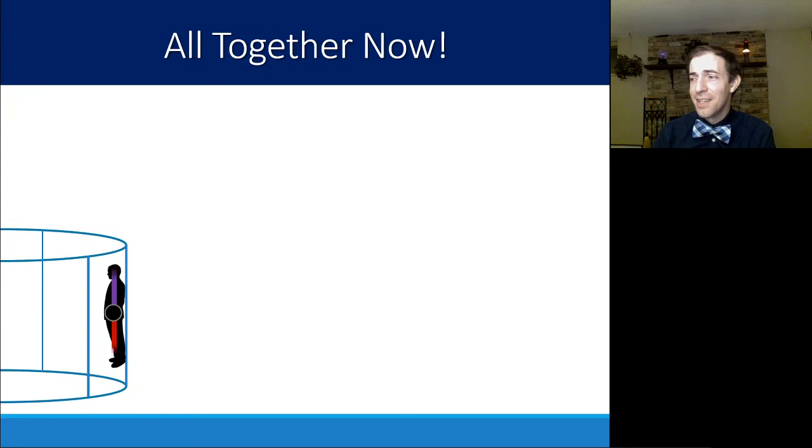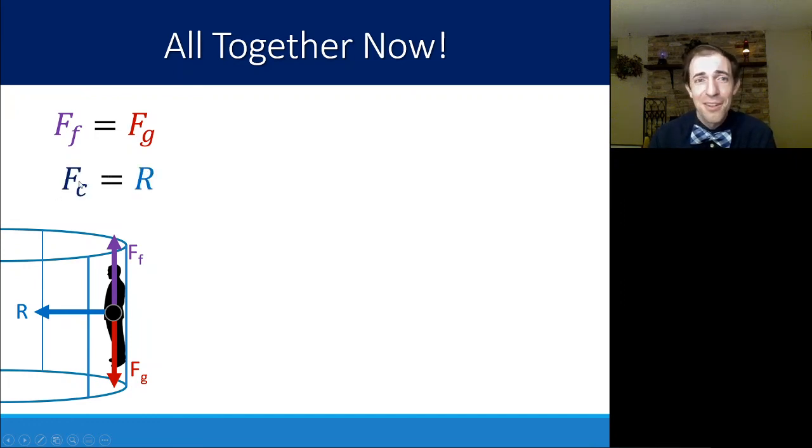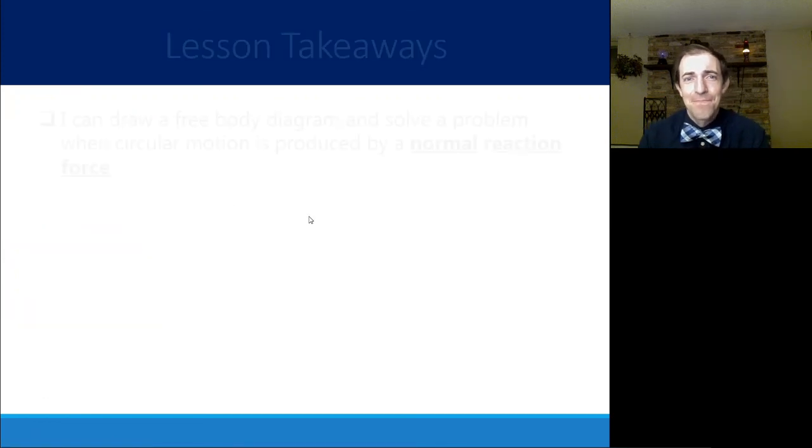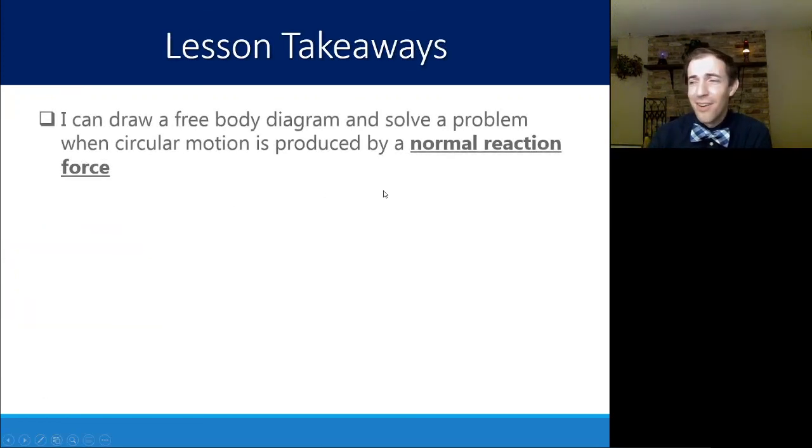All right, so as a recap of all of that, we know that for a rotor, force of gravity is going down, and force of friction is preventing you from sliding down. That is the force pushing up. So in order for you to not be accelerating up or down, FF has to equal FG. That is like a hidden equation that is built into this example, and you know that if you draw the free body diagram. We also know that pointing towards the center is R, and because FF and FG are equal and opposite, the overall force is R, the net force. And that means that the centripetal force, because it's moving in a circle, is also R. So our takeaway here, you should know how to draw a free body diagram and solve when circular motion is produced by a normal reaction force like it is here in the rotor problem.